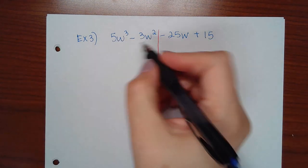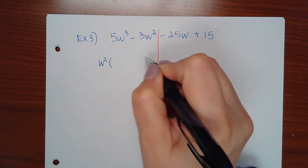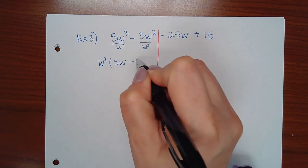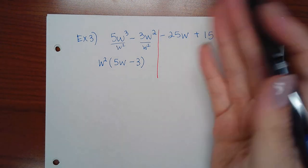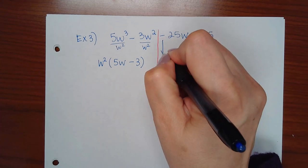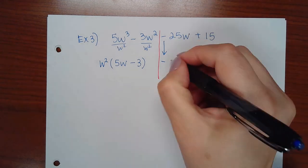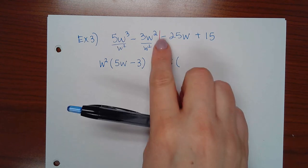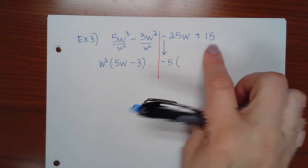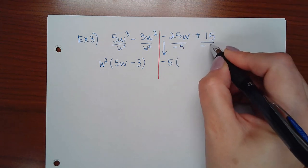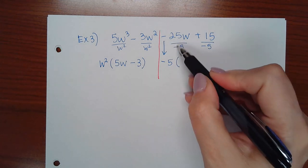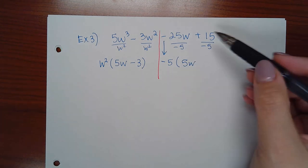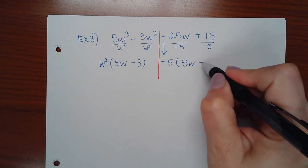The left two terms share w², so factoring that out gives w²(5w + 3). On the right side, bring down the minus sign. Both terms can be divided by 5, but we're dividing by negative 5, so −25 ÷ −5 = +5w and +15 ÷ −5 = −3, giving −5(5w − 3).